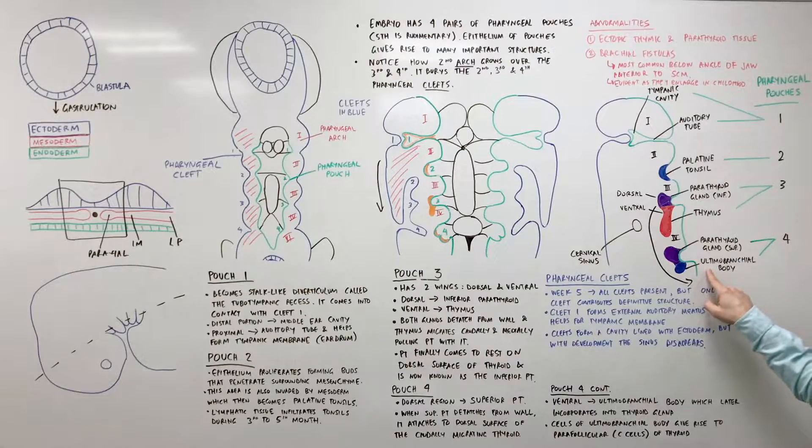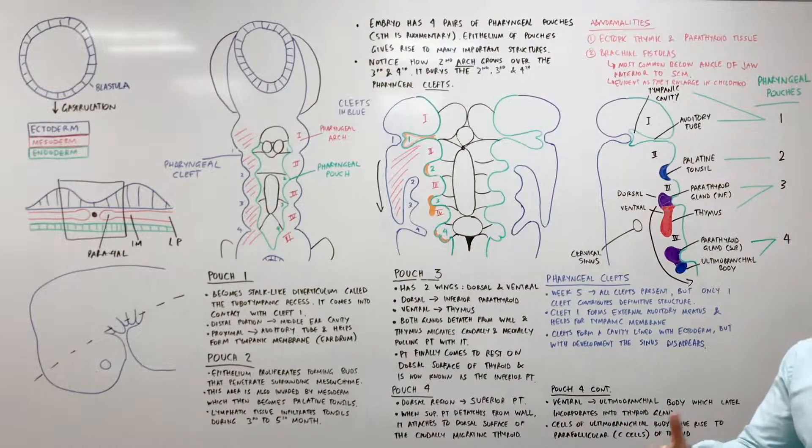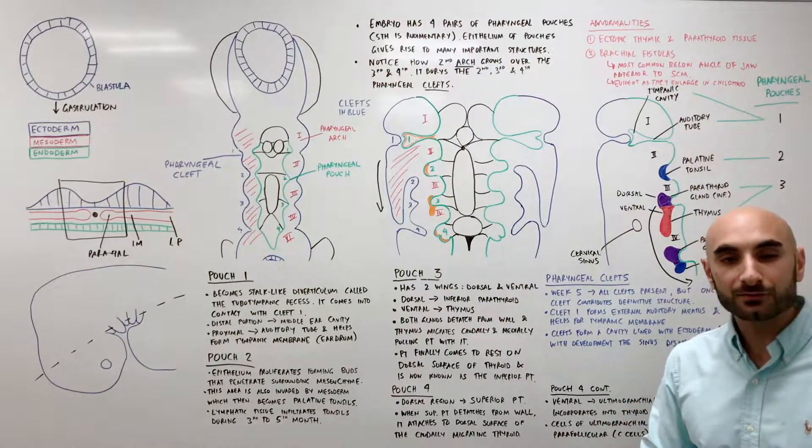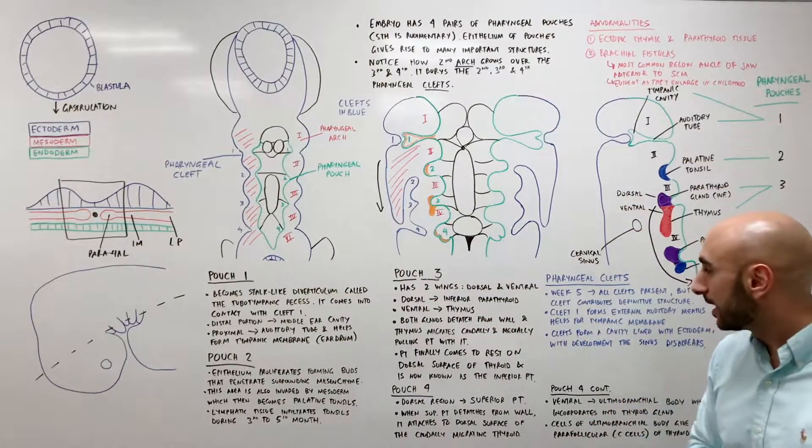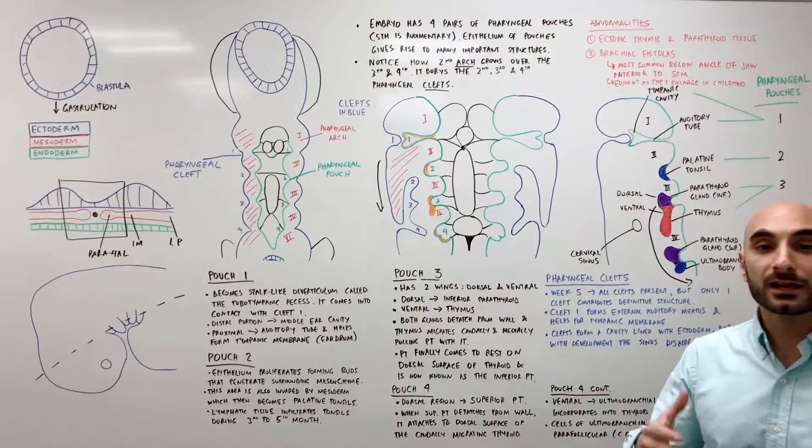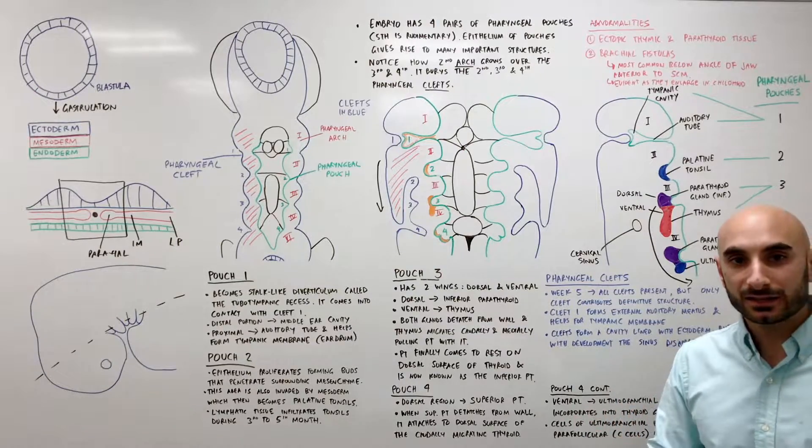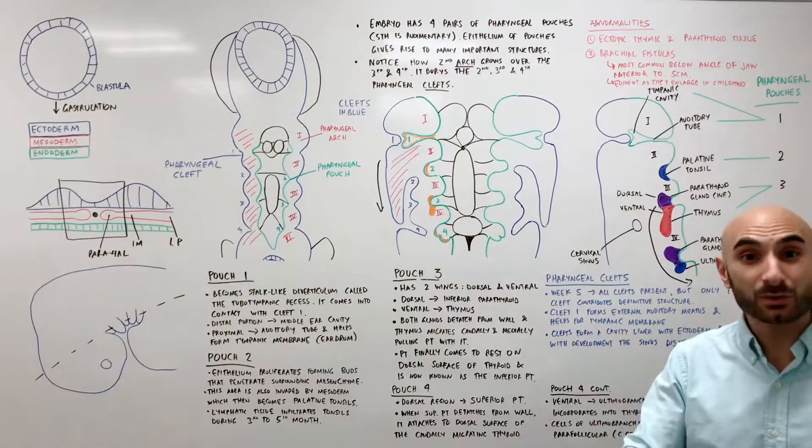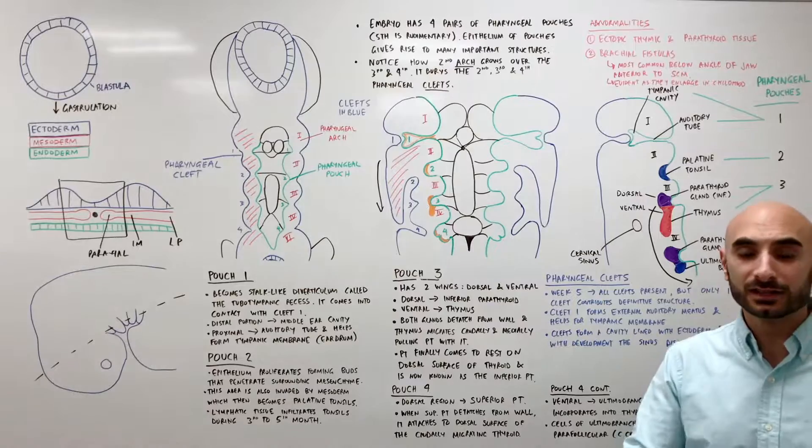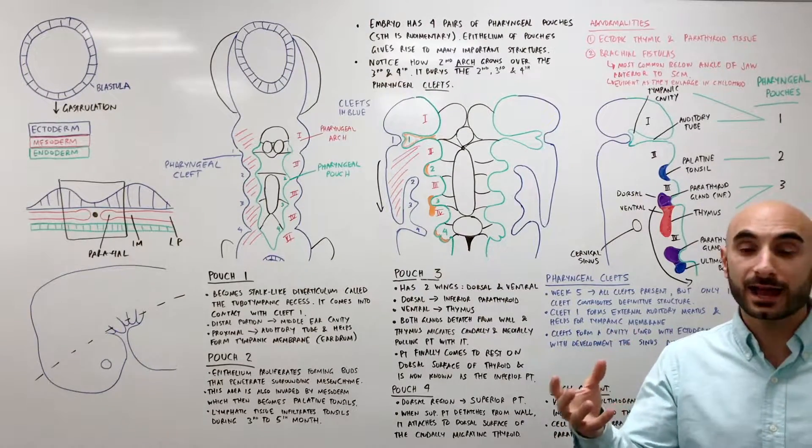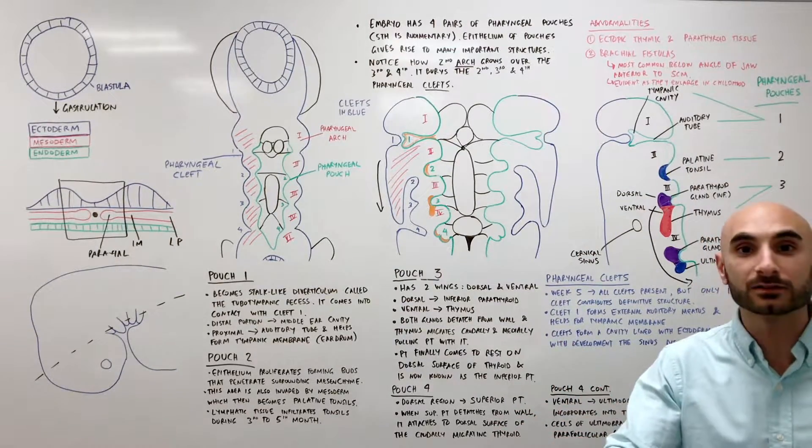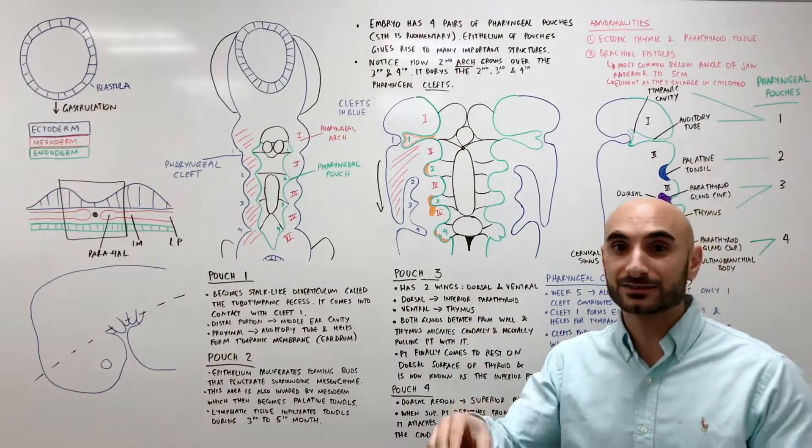Now the ultimobranchial body becomes a very simple thing. It's essentially the C cells of the thyroid. The C cells are also known as the para-follicular cells of the thyroid. And they release calcitonin. And what calcitonin does in the body is that when there are high levels of calcium in the body, it regulates its level by turning down the amount of calcium in the blood. So essentially, calcitonin calcitones it down. So if you want a quick way to remember that, is that high calcium in the blood means C cells release calcitonin to calcitonin down of the calcium. So you have less calcium in the blood.